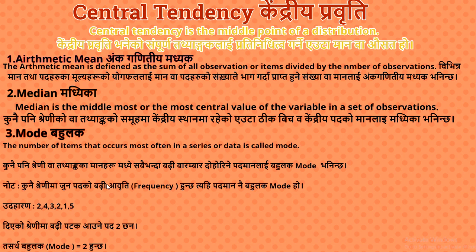For example: suppose the series is 4, 3, 2, 1, 5. The mode of this series is 2. This is an example of an individual series problem. The three types of series are: Continuous Series, Discrete Series, and Individual Series.